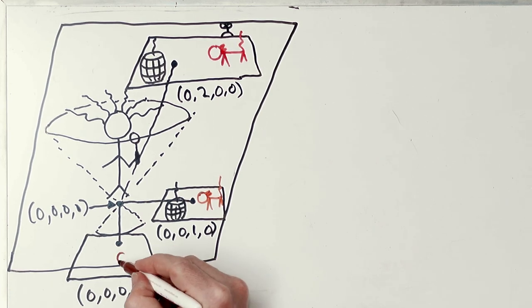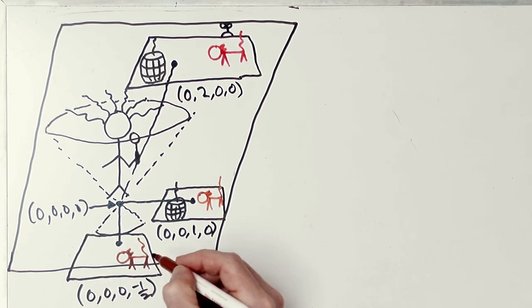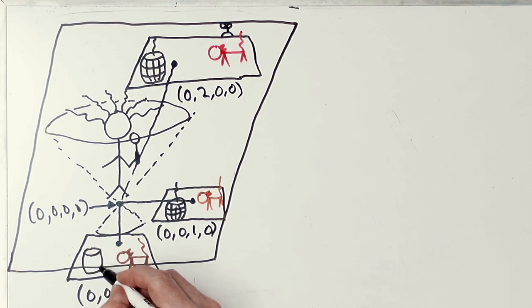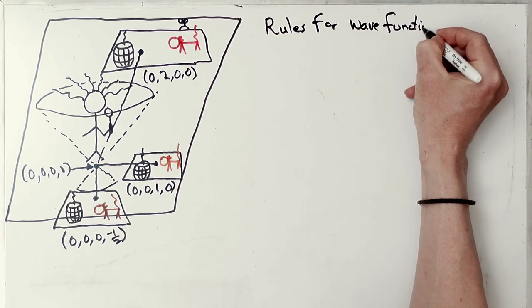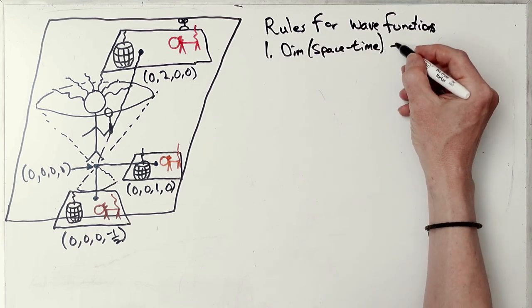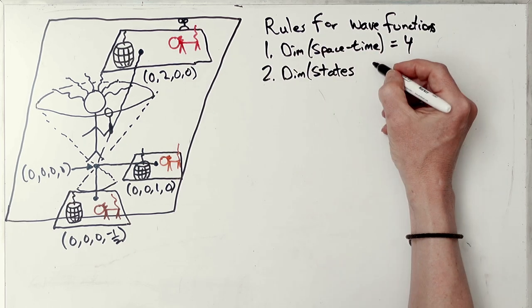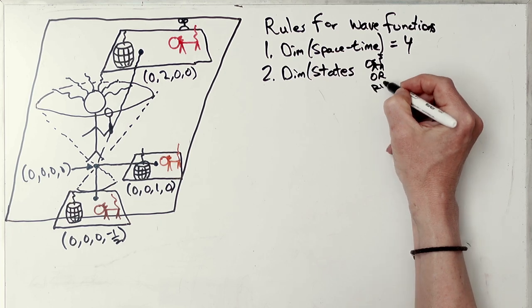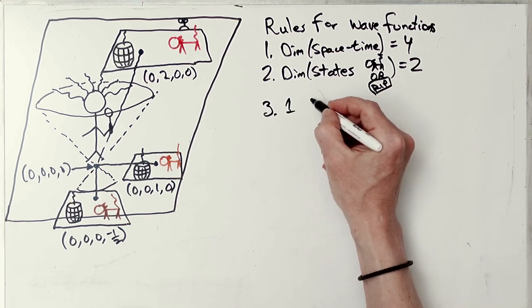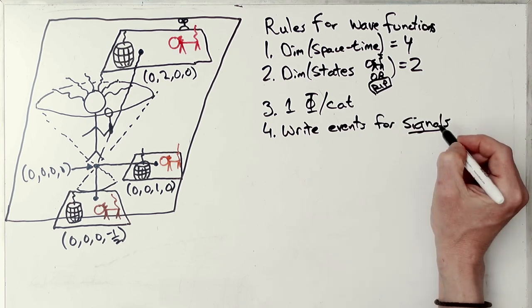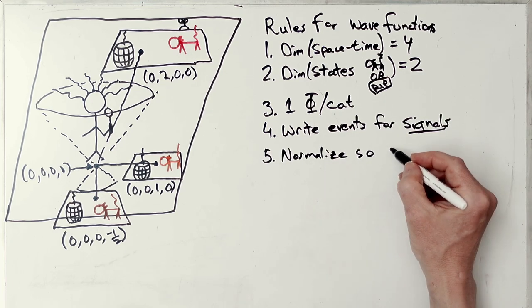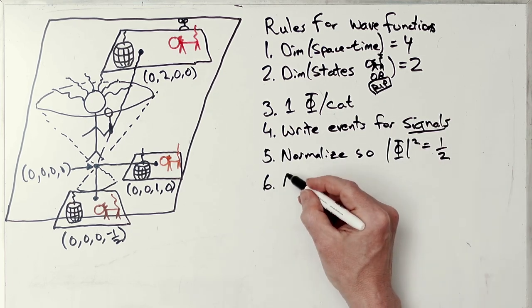So now what are the rules for writing wave functions? The dimensions of space-time is four, the dimensions of states is two, either live or dead. It's orthogonal by the way. One wave function per cat, we write events for signals and we normalize them so that the wave function has a value of a half.